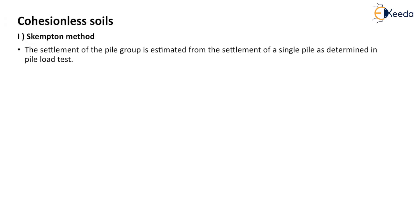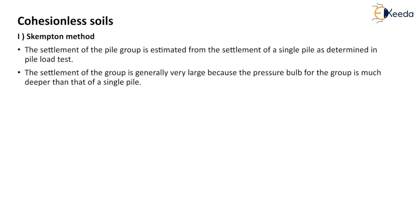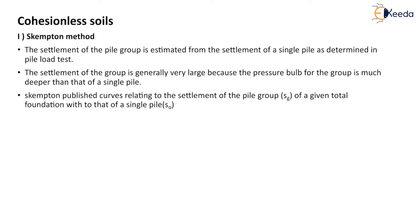The first method is the Skempton method. The settlement of the pile group is estimated from the settlement of a single pile as determined in the pile load test. The settlement of the group is generally very large because the pressure bulb for the group is much deeper than that of the single pile. Skempton published curves relating the settlement of the pile group SG for a given total foundation width to that of a single pile S0. The curve can be used for both driven and bored piles.